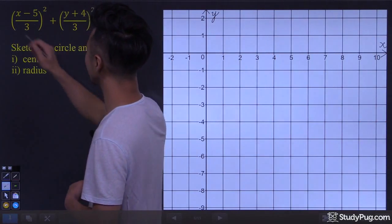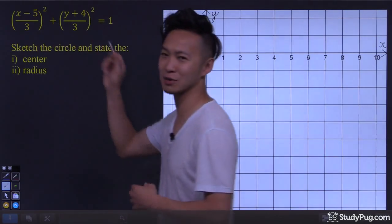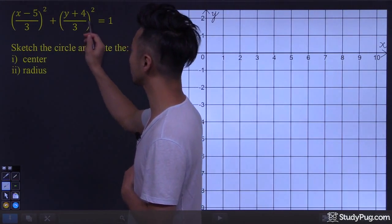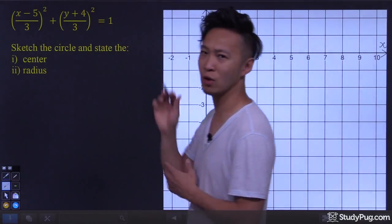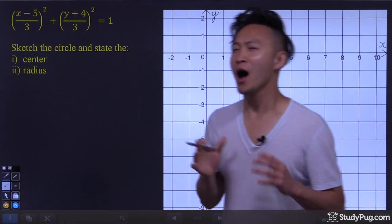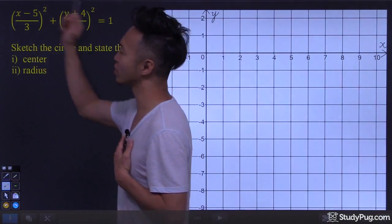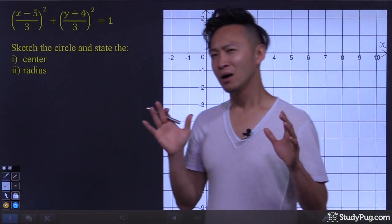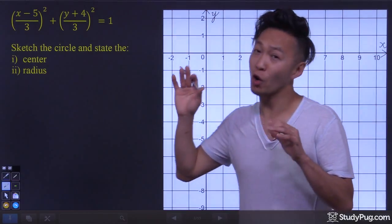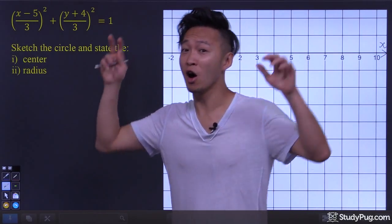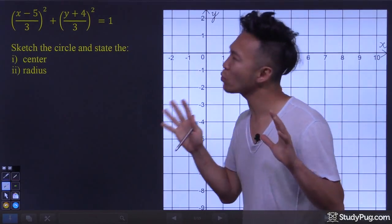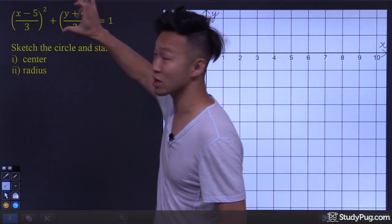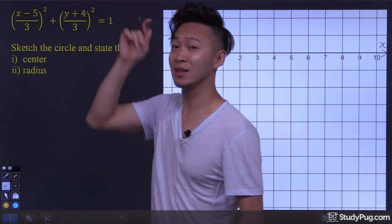Let's sketch this circle equation in conic form. We've got x minus 5 over 3, squared, plus y plus 4 over 3, squared, is equal to 1. First of all, how do I know this is an equation for a circle? I like to think of a circle as just a specific case of an ellipse. So I'm going to quickly modify this equation to an ellipse.